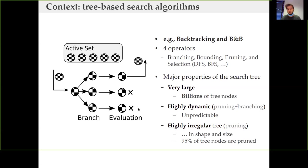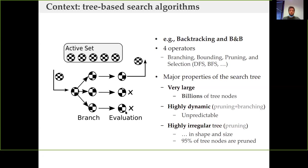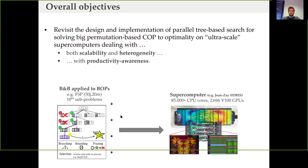Those prunes make the shape of the tree quite irregular, so we have a computational application which is quite irregular. In this kind of application, the work distribution and load balance is crucial for achieving scalability. Our objective is to revisit the design and implementation of parallel tree-based search.